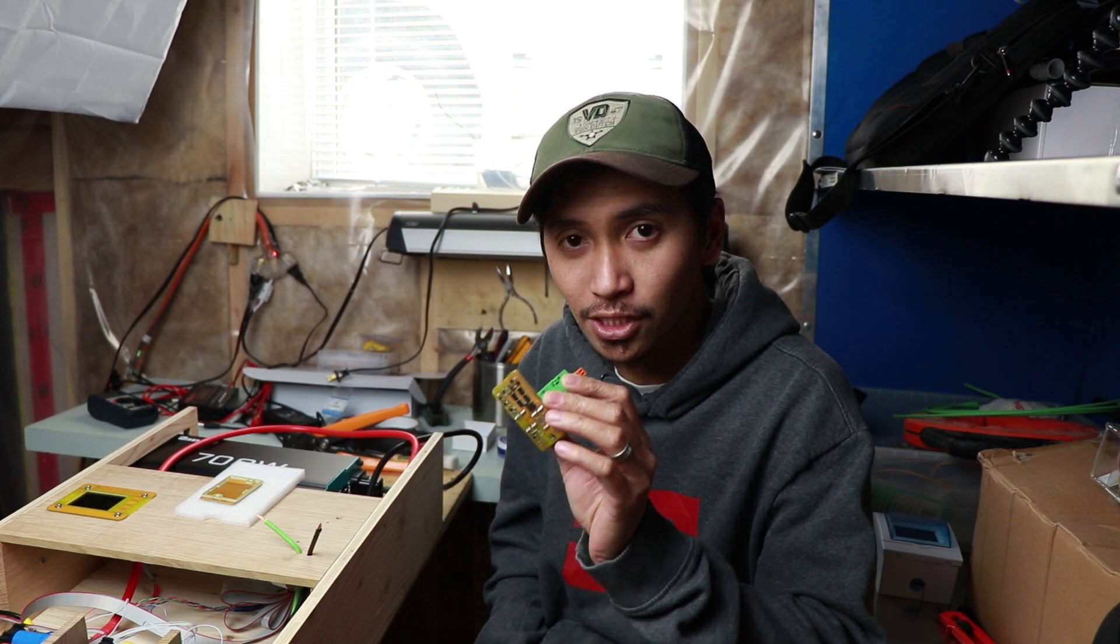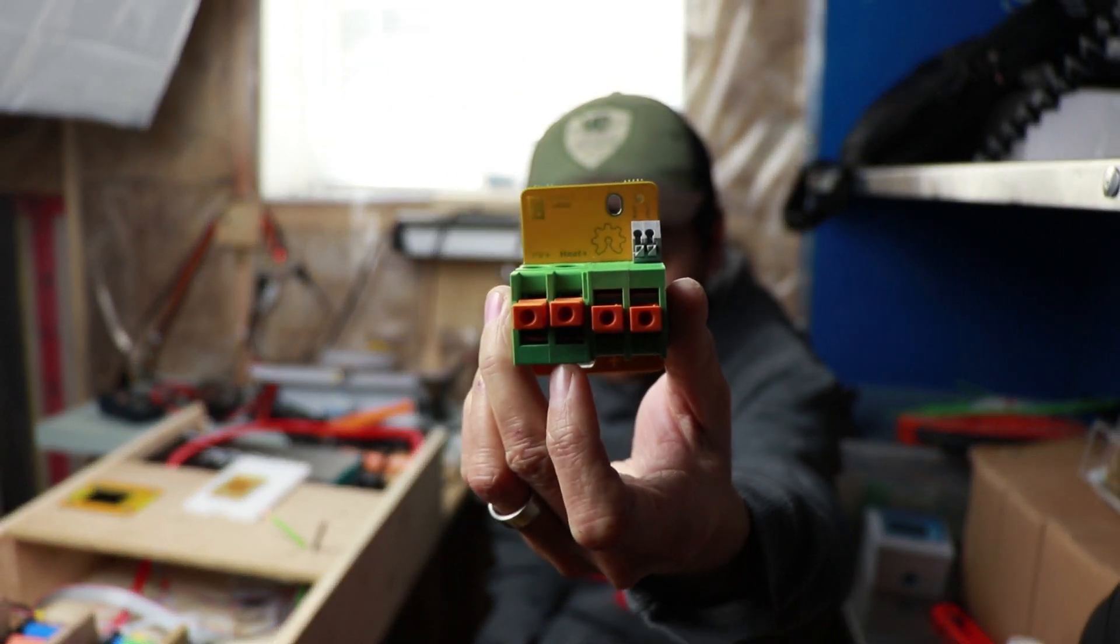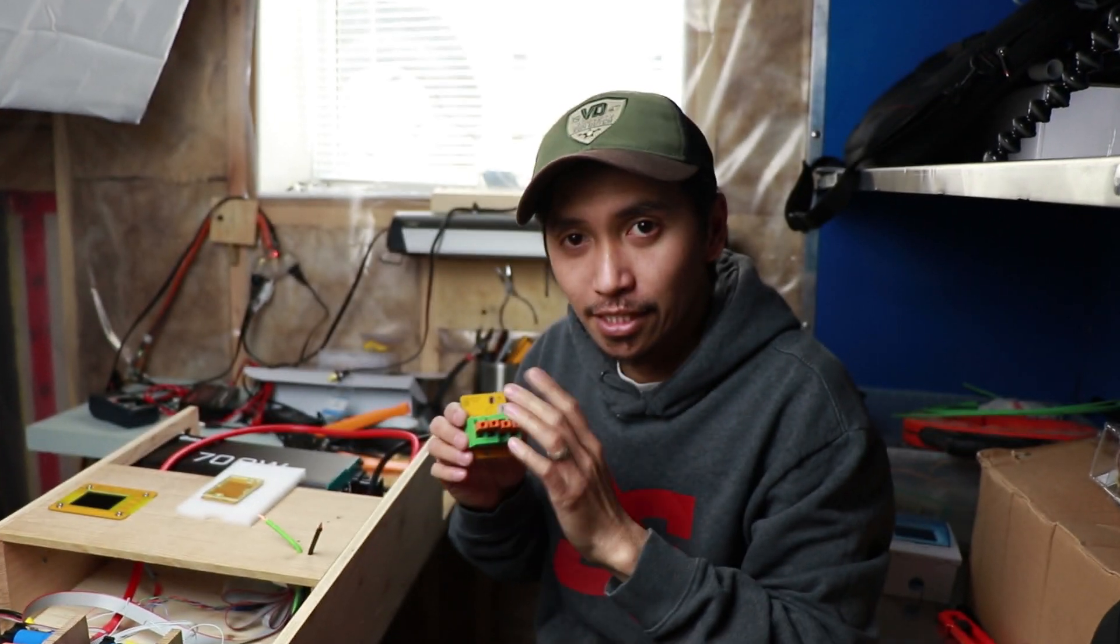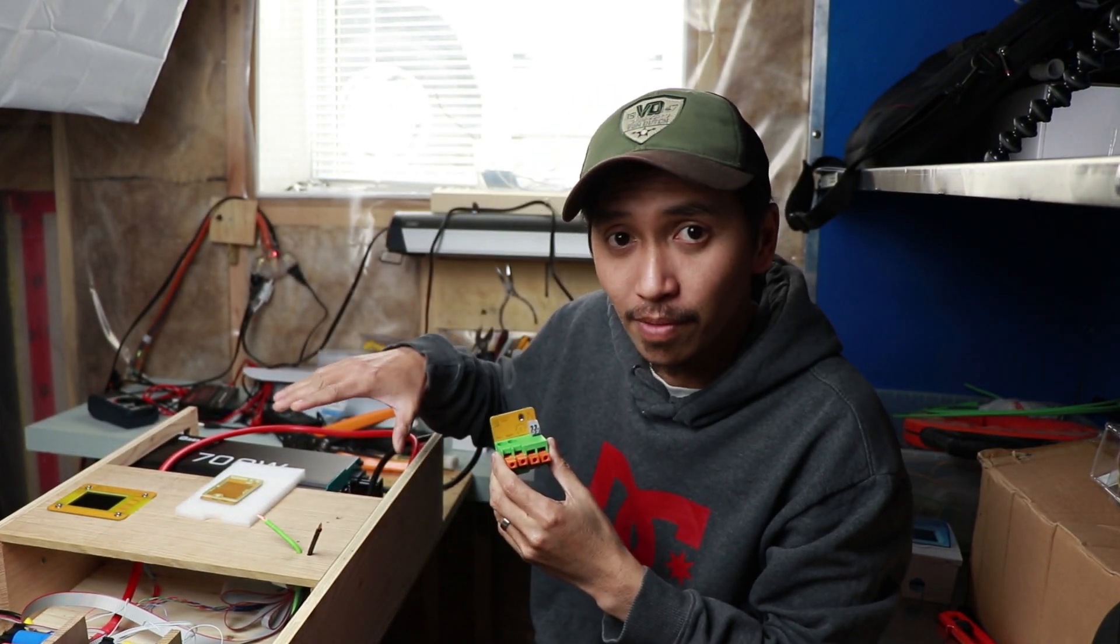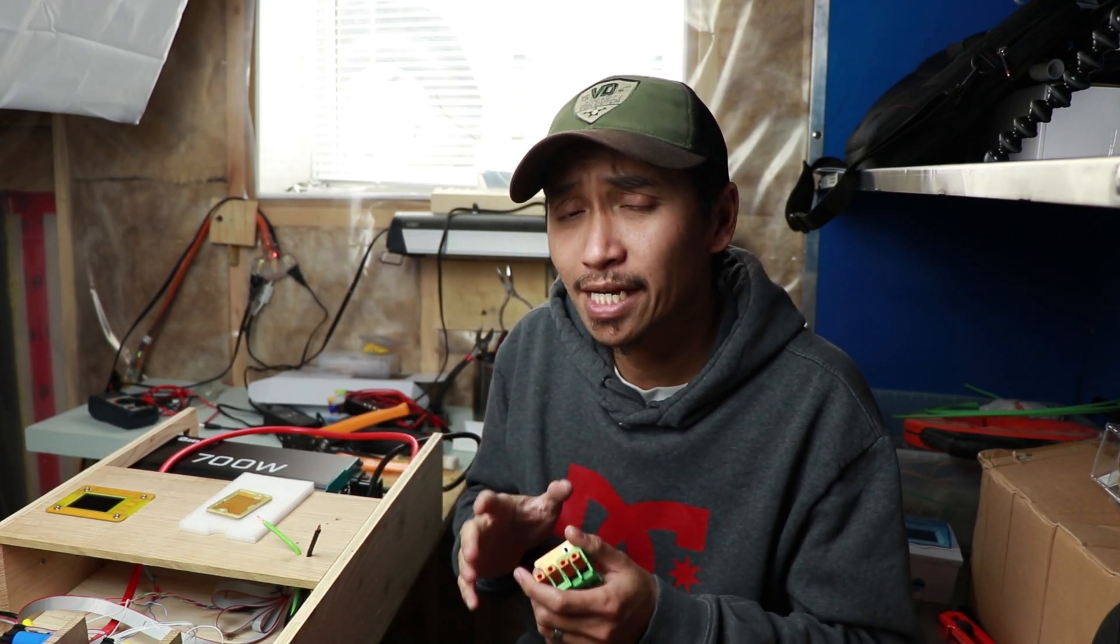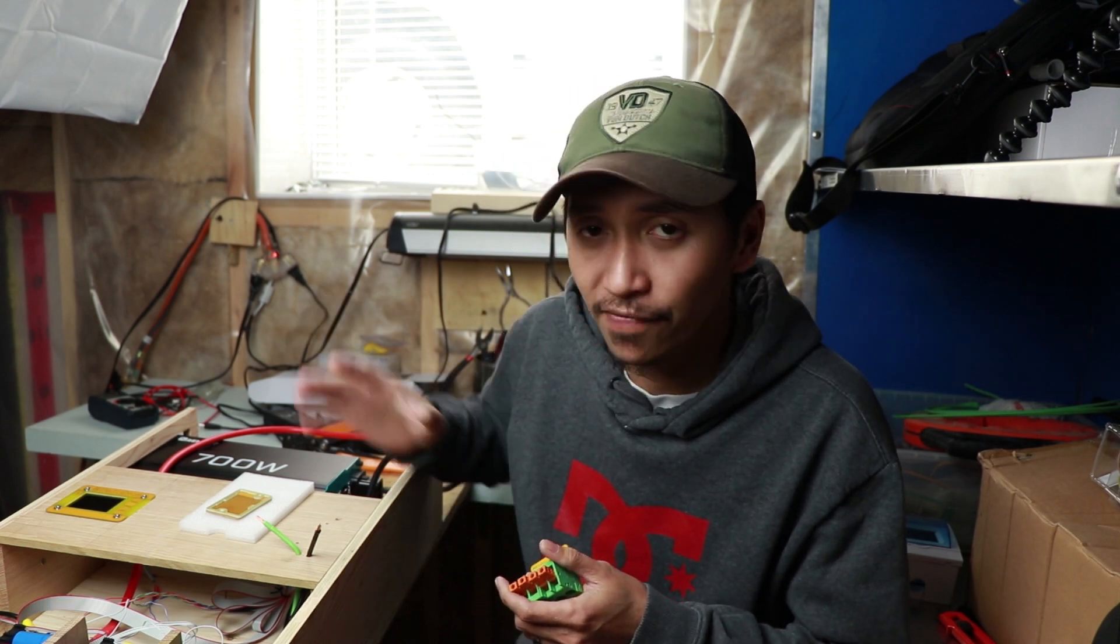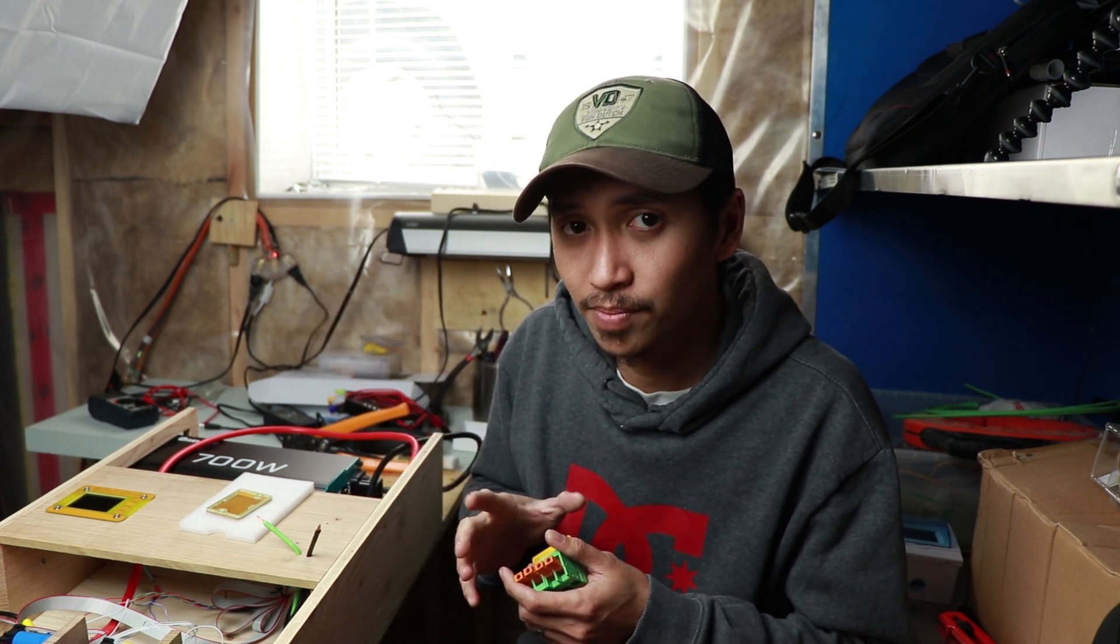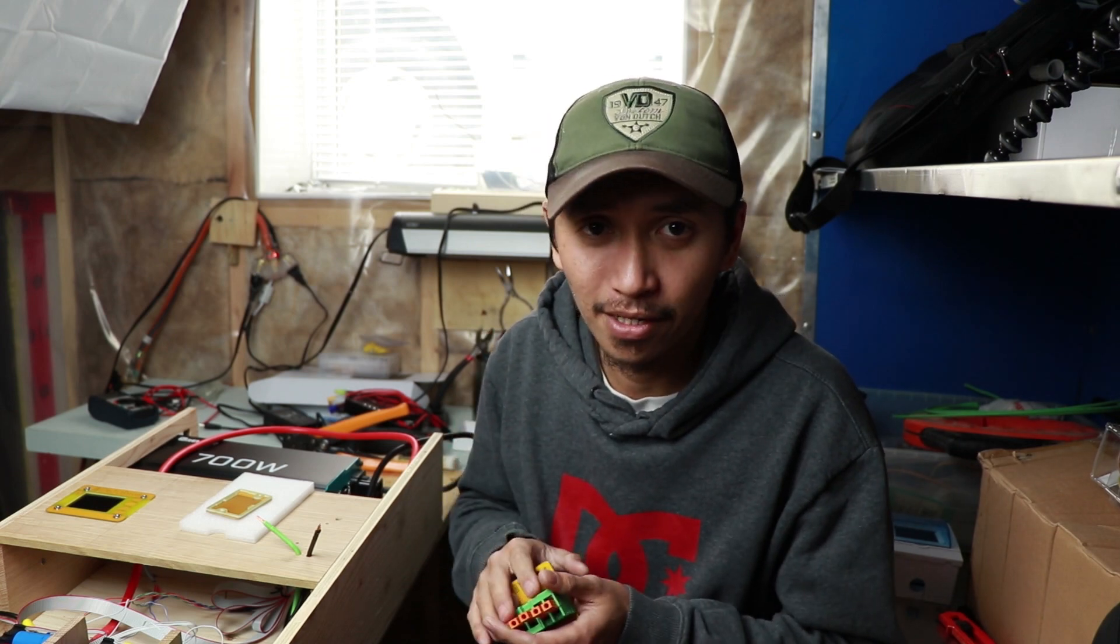This is the DSSR20 right there guys. So technically, this is the solar charge controller for this system. He's telling me that it could go up to 20 kilowatt of load and this device could also go up to 30 kilowatt of PV array.